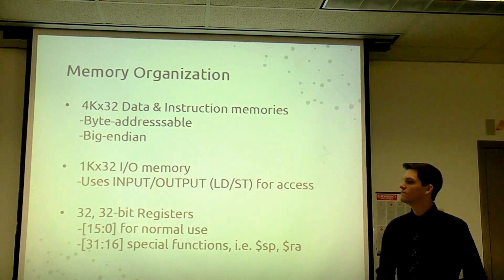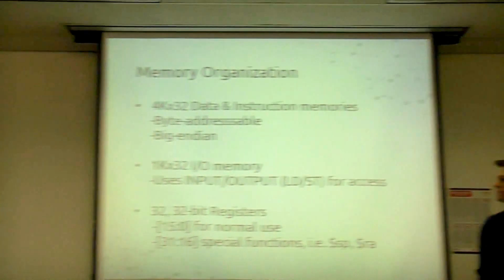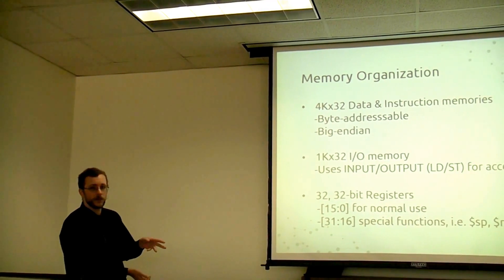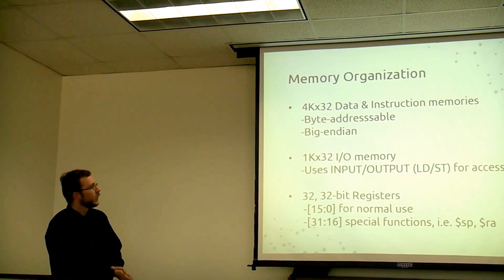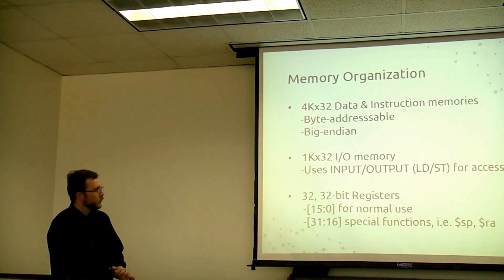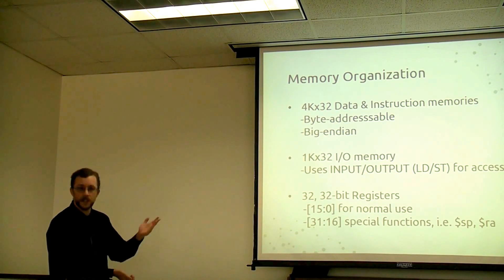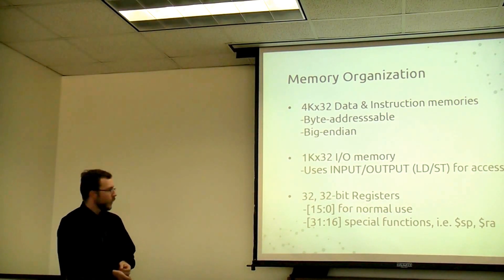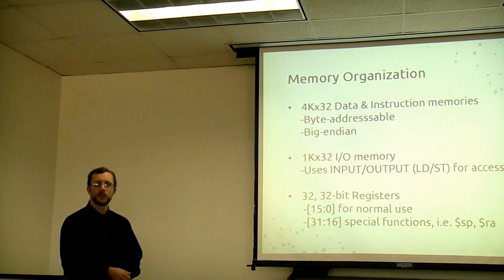Our memory is organized into two 4K by 32 data and instruction memories. That's a Harvard architecture, byte addressable, and in big endian format. We also have IO memory that's 1K by 32, uses input/output — which is your loads and stores. Since this is a RISC machine, those are the only memory accesses. Lastly, we have 32 32-bit registers. The first 16 are for normal operations — saving results of adds, subtracts, things like that.